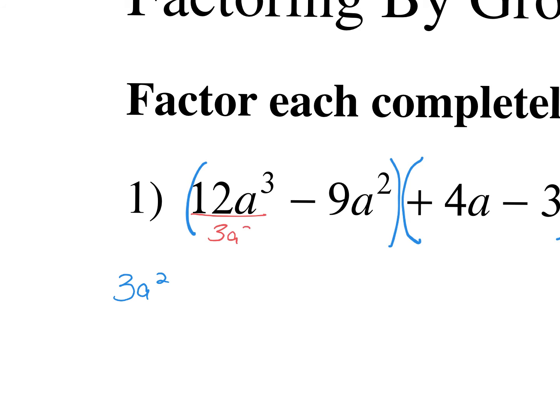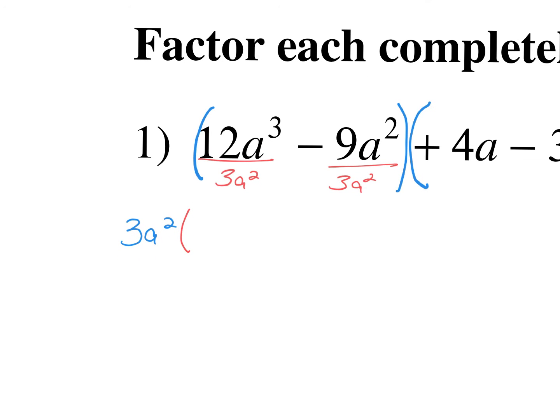I'm going to take out my 3a squared and put it out in front, dividing everything by 3a squared. Show me as much work as you can: 12 divided by 3 is 4, and a cubed divided by a squared gives me just a. Then negative 9 divided by 3 is negative 3, and the a squareds cancel out. So I'm left with 4a minus 3.